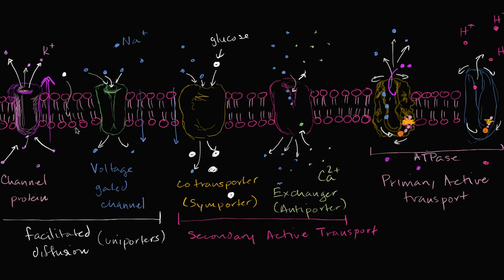As we start to talk about things with more charge or things that might be larger, we're going to need some help. The first type of help is just help to allow things to flow down their concentration gradient, and that we call facilitated diffusion. We have a whole video on facilitated diffusion. One form of facilitated diffusion is to just open up a tunnel and let things flow down their concentration gradient — we saw that with the potassium ion channels.